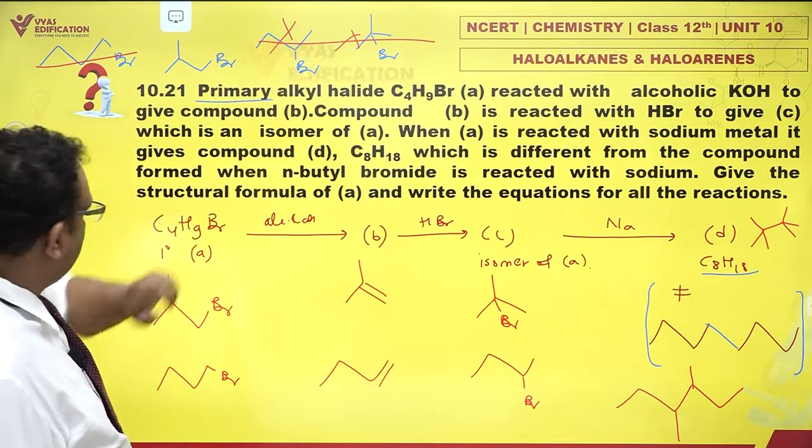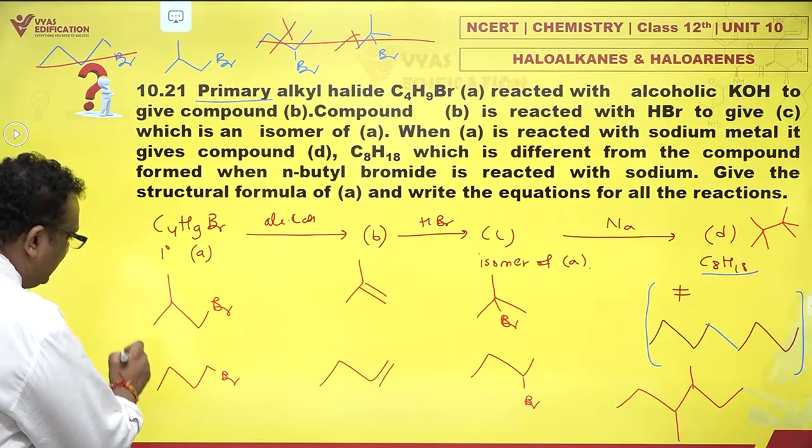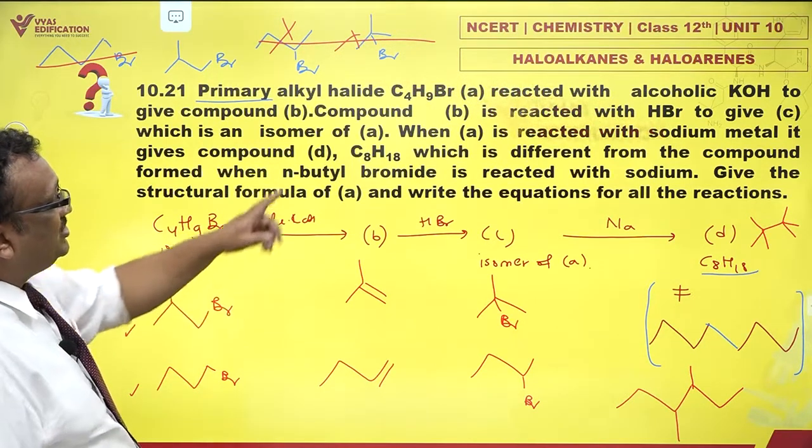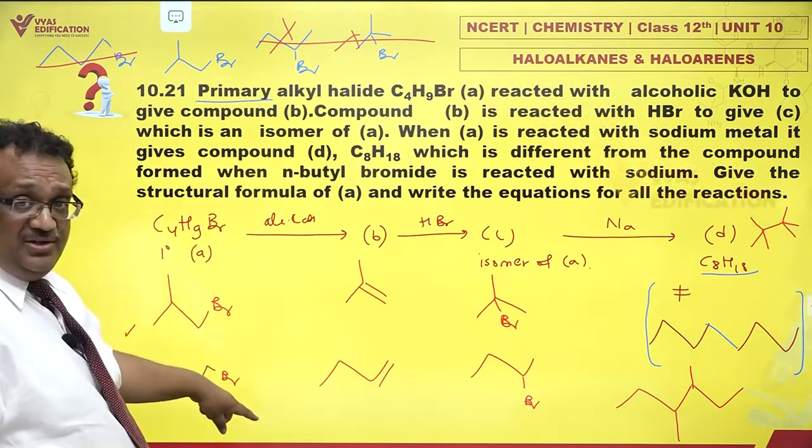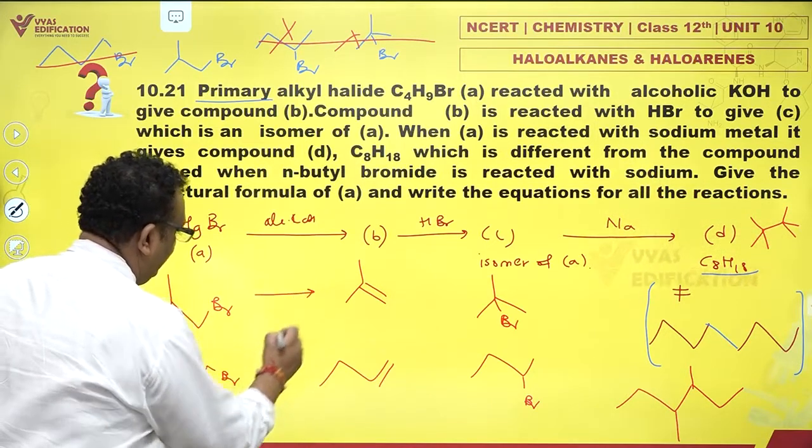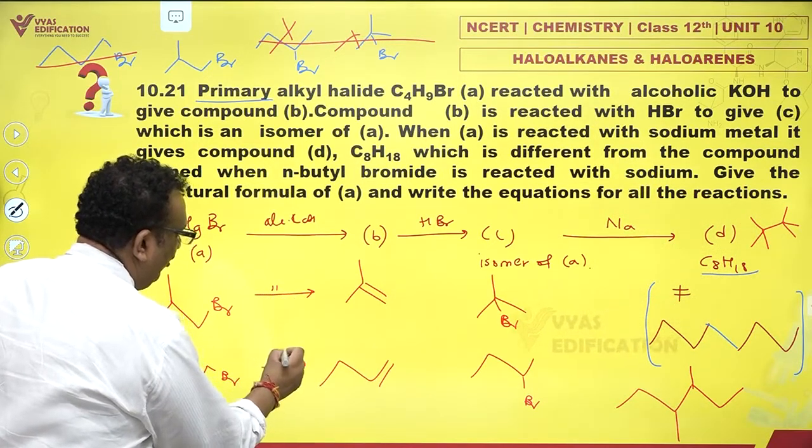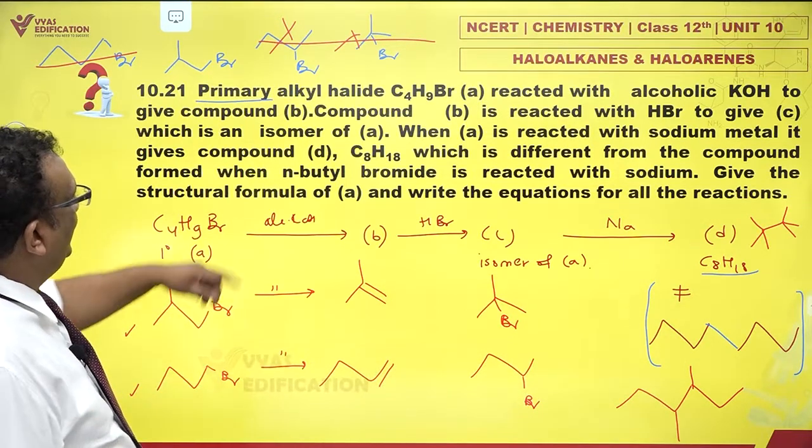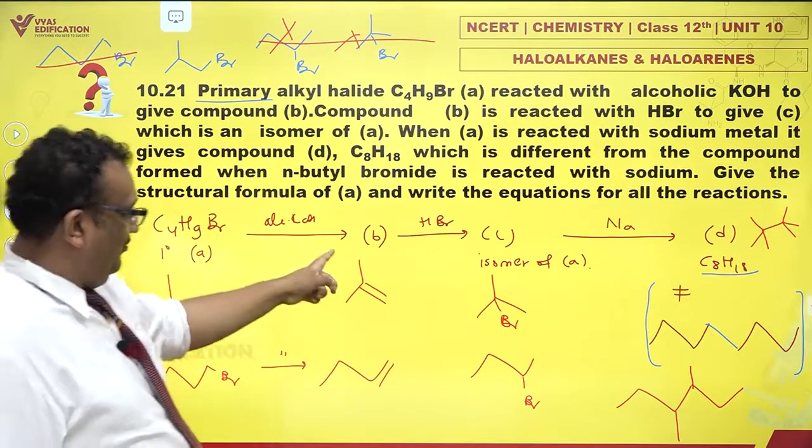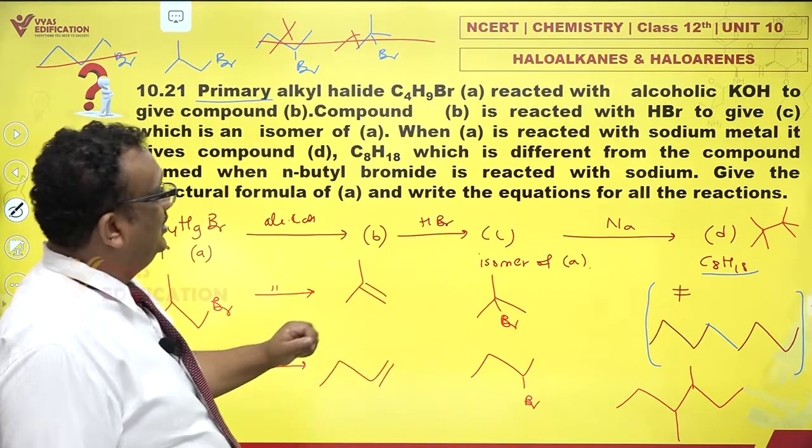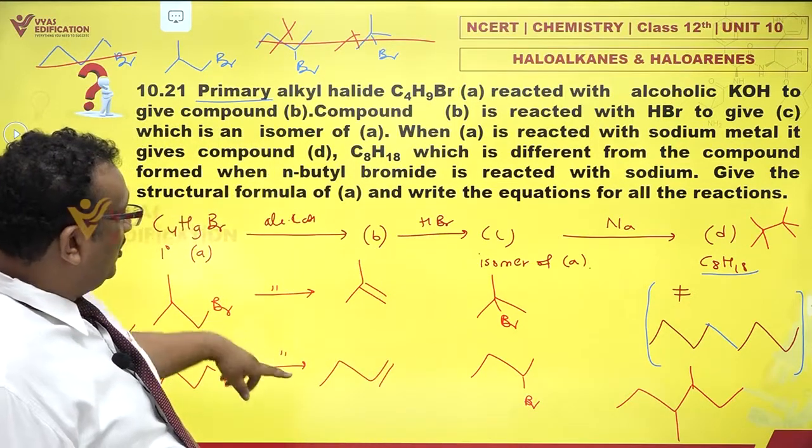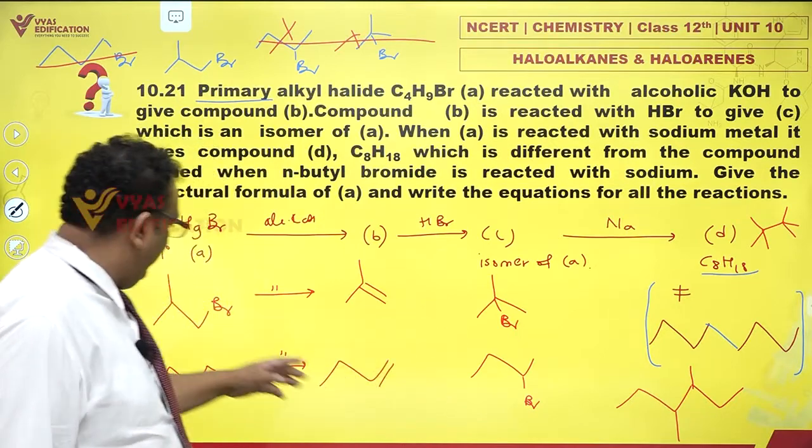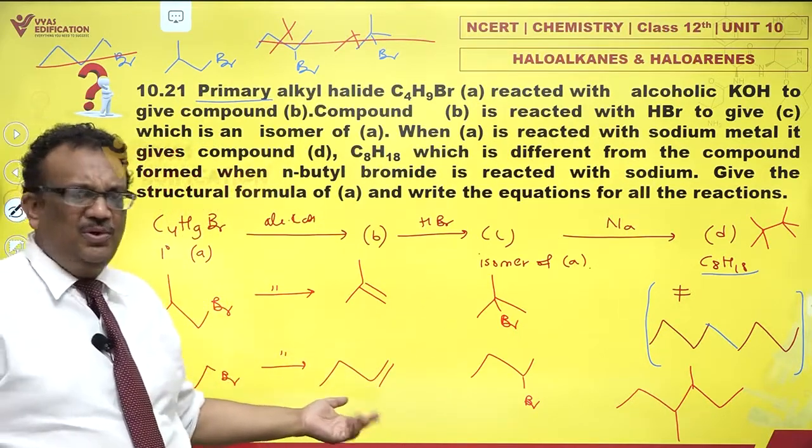This would have been the answer. So these both seem to be having a kind of favor with us. Primary alkyl halide - is this primary? Yes. Is this primary? Yes. It is reacted with alcoholic KOH. It reacts. I am trying out two options to give a compound B. I get compounds B's. B is reacted with HBr. Well, I give Markovnikov addition to give C, which is isomer of A. Is C an isomer of A? Yeah, it is isomer. Fine.